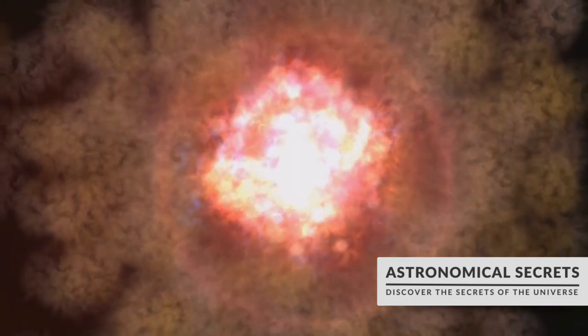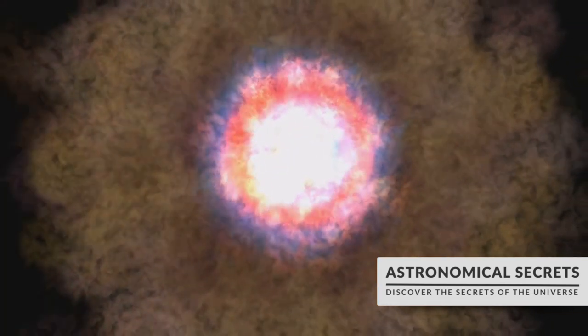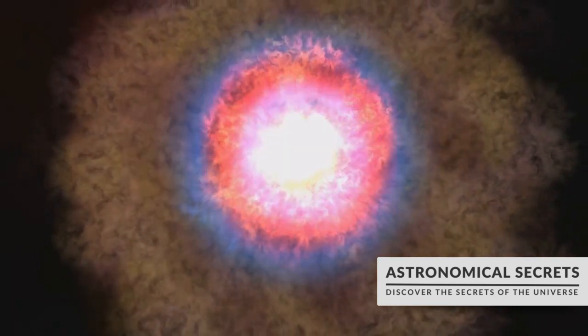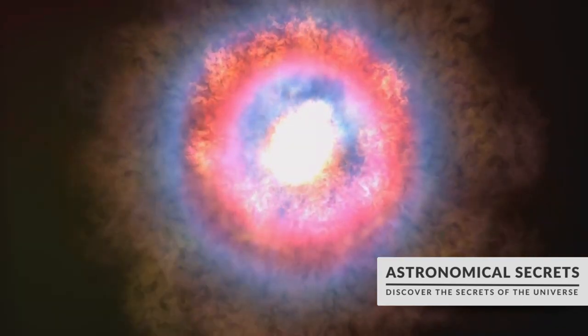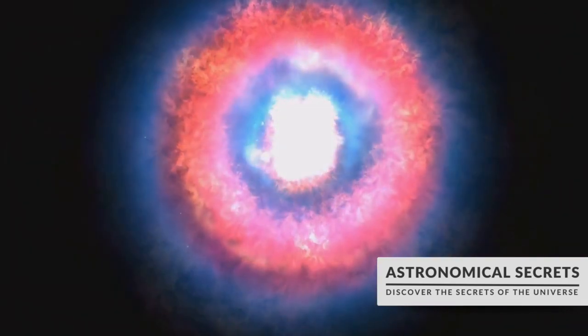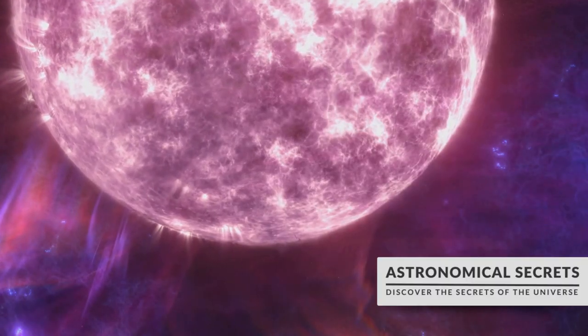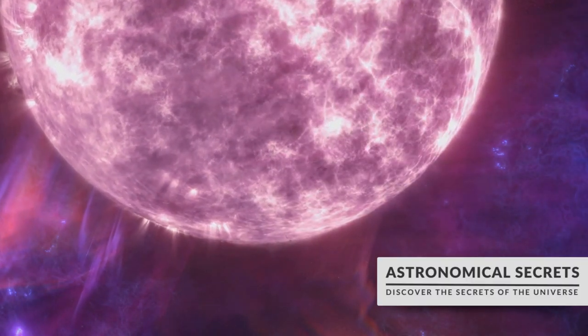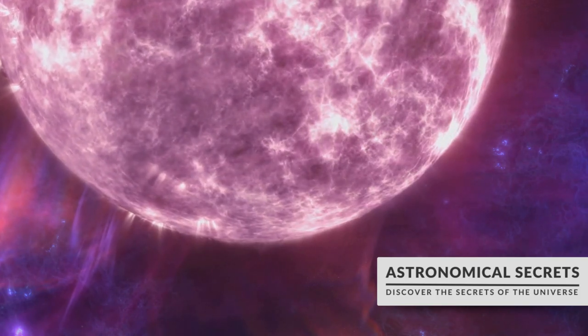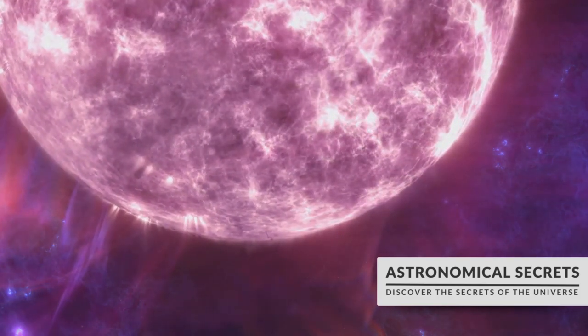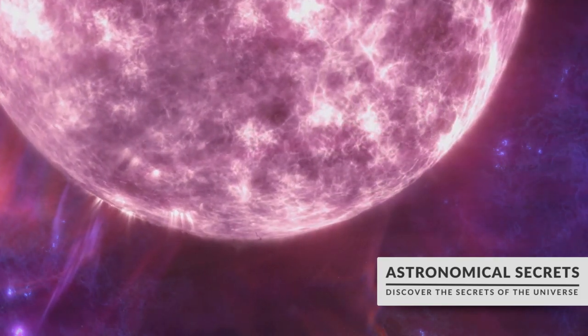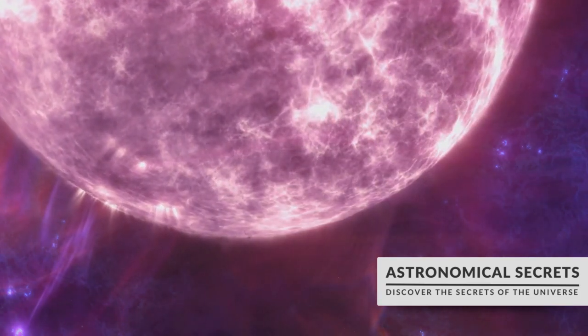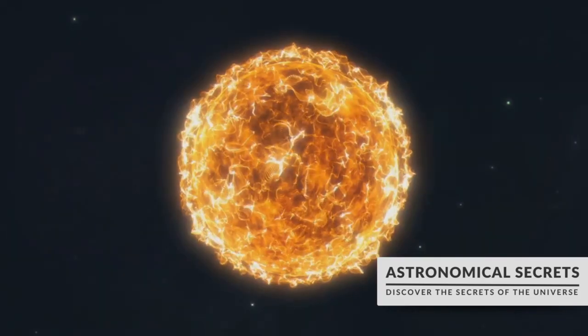But how is such extreme density even possible? Well, neutron stars are the remnants of massive stars that have gone supernova. The core of the star collapses under its own gravity, and the protons and electrons are so tightly packed that they merge into neutrons, hence the name neutron stars. This process results in an object with a mass of about 1.4 times that of our sun, all crammed into a sphere with a diameter of about 12 miles.